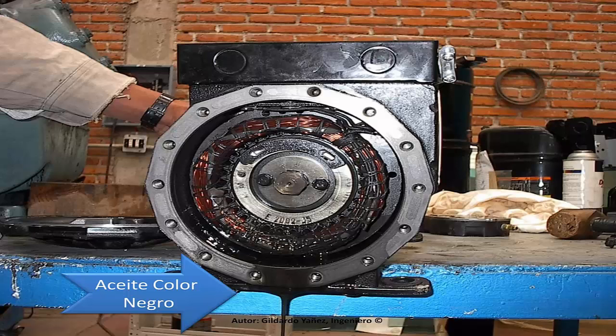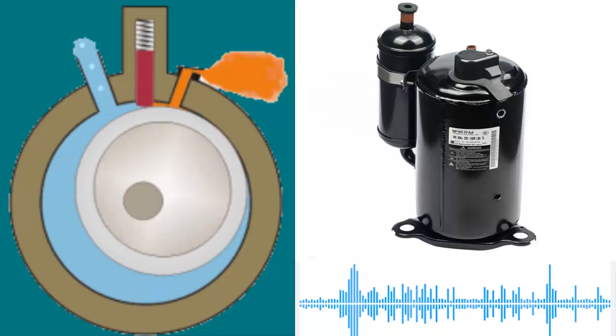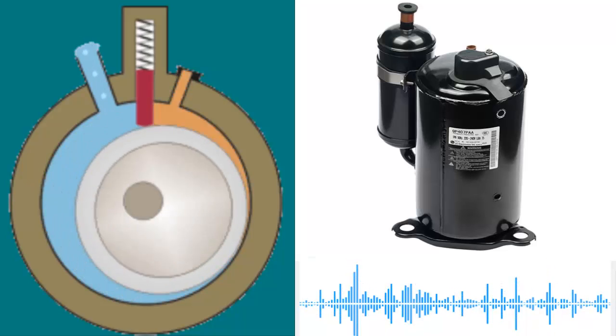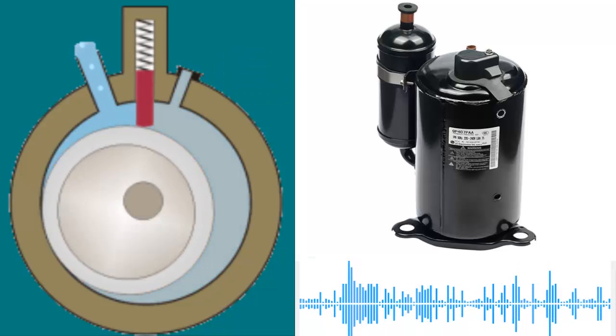The compressor oil can turn black when the air conditioning system operates with excessively high pressure for an extended period. This high pressure can generate microparticles of carbon in the oil, leading to its darkening.